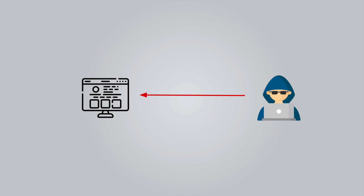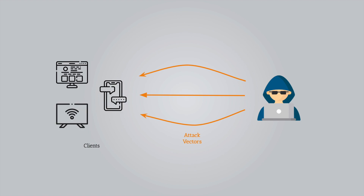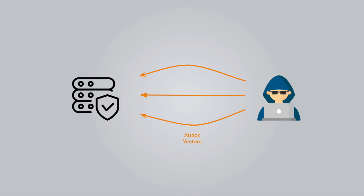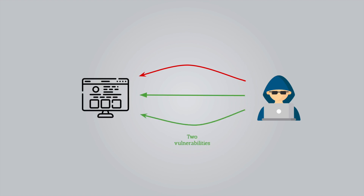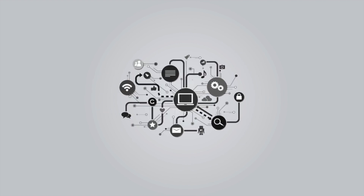Hackers are always looking for ways to exploit web applications and take advantage of sensitive data. Both servers and clients are targets for hackers and can be exploited in many ways. If your web server is secure, the target will be the client, mainly web application front-ends and mobile apps. There are many ways a vulnerable web app can be compromised, and the complexity of modern browsers and web applications gives as much flexibility to hackers to exploit systems as it provides functionalities and features.